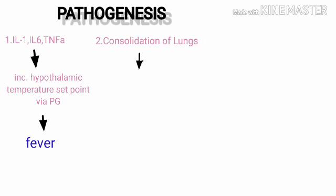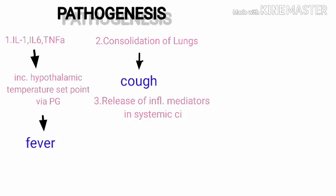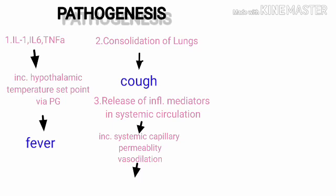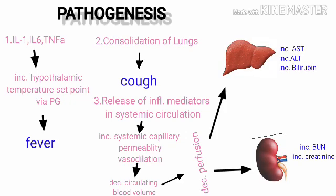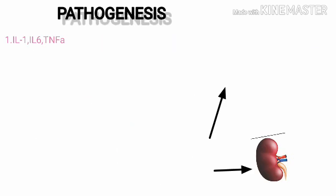Consolidation of the lung leads to cough. Interleukin-1, interleukin-6, and TNF-alpha released into systemic circulation increase systemic capillary permeability and vasodilation, decreasing circulating blood volume. This decreases perfusion to major organs like the liver and kidney, leading to increased AST, ALT, bilirubin, and increased BUN and creatinine in the blood.